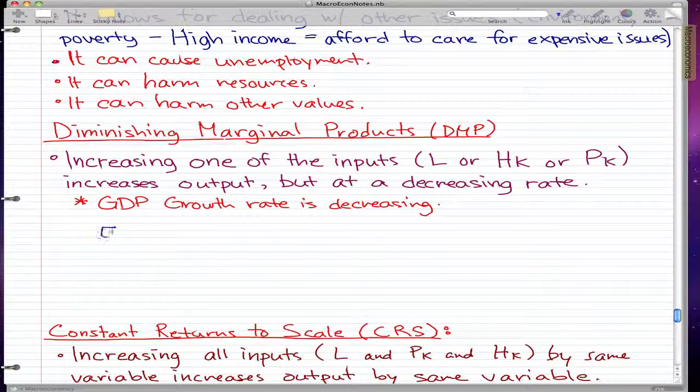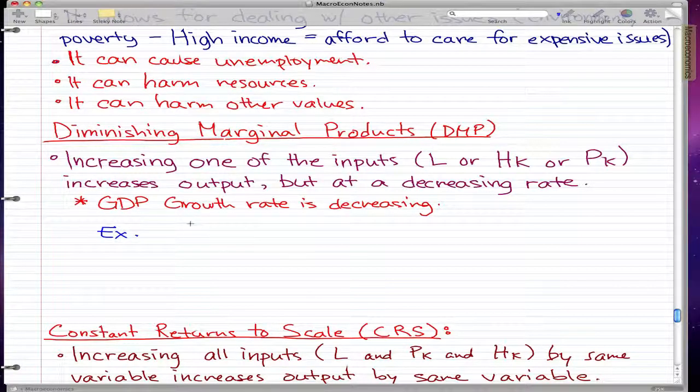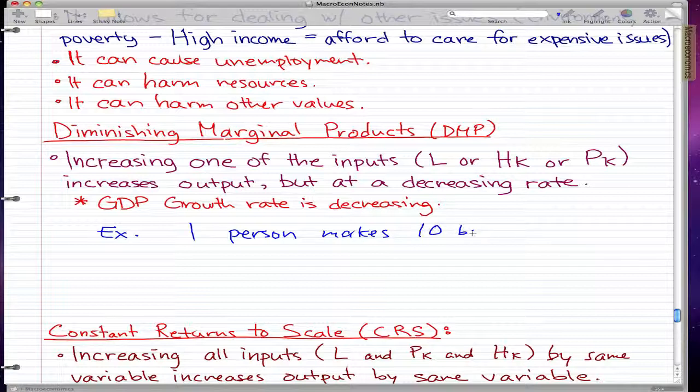An example of this would be one person makes 10 bytes, and then if we add one more person, two people make 18 bytes.